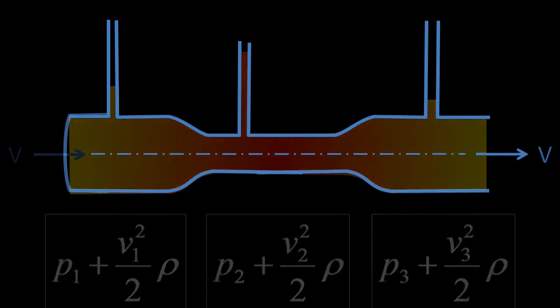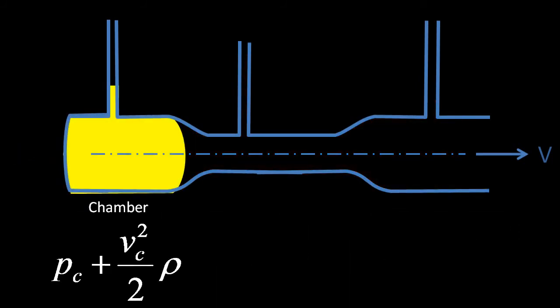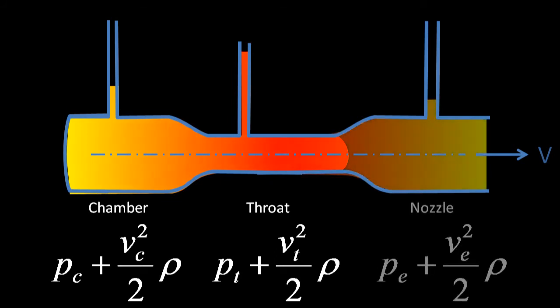Compare this to a gas rocket engine. The chamber has a static pressure, PC, which gets compressed in the throat with a static pressure, PT. Then the exhaust expands in the nozzle to a static exit pressure, PE. These are static pressure values.